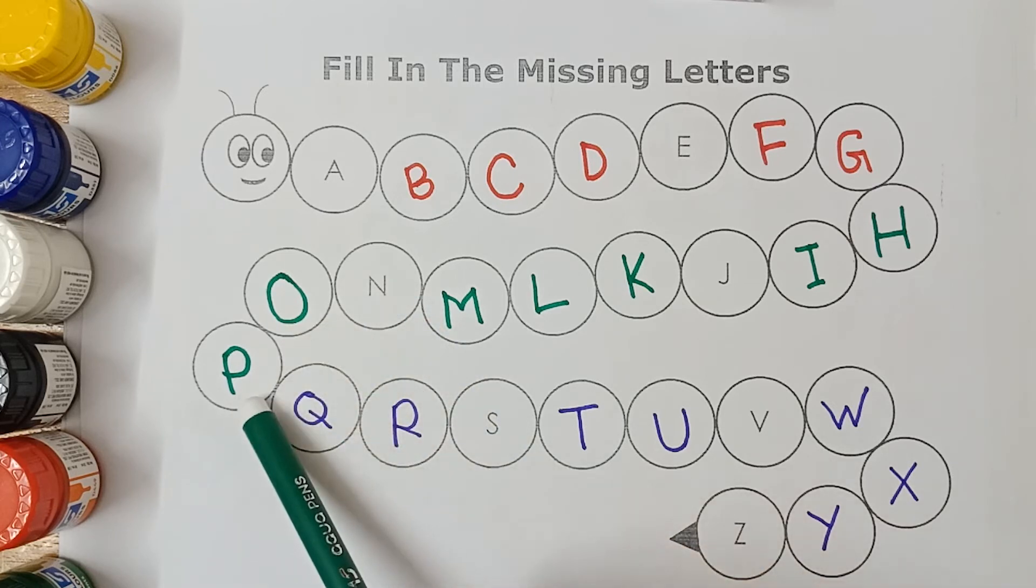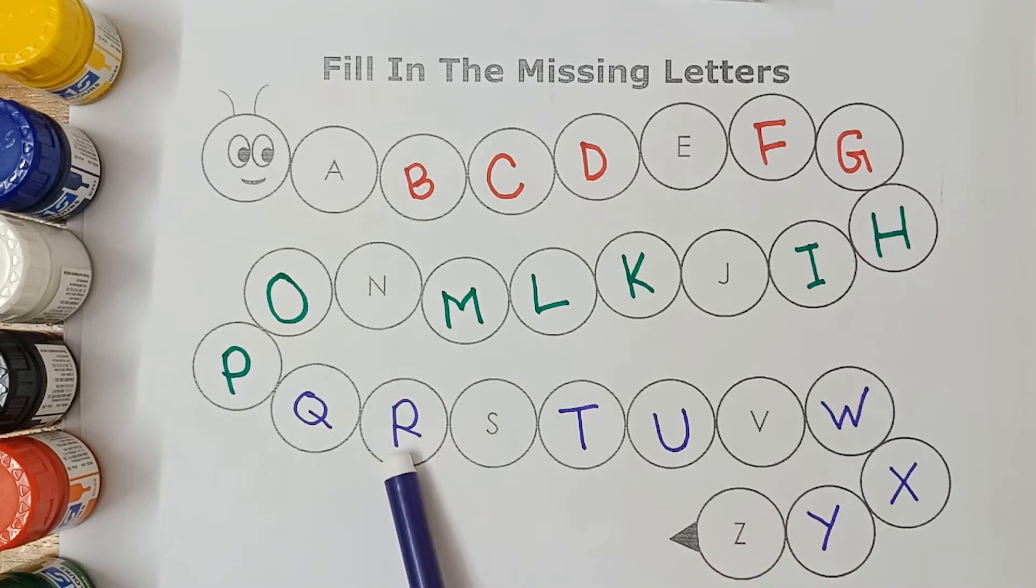P, P for pen. Q, Q for queen. R, R for rose. S, S for socks. T, T for tiger.